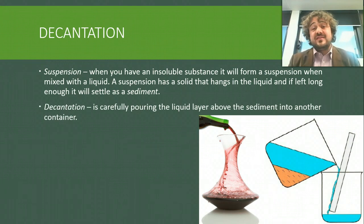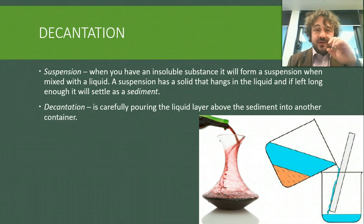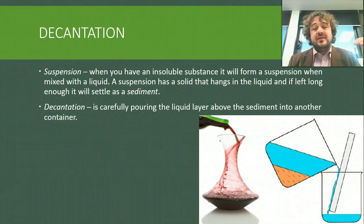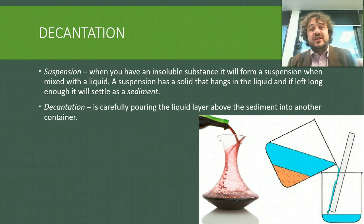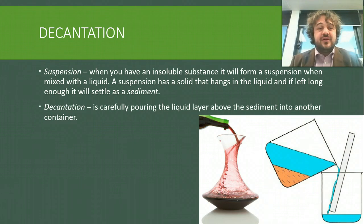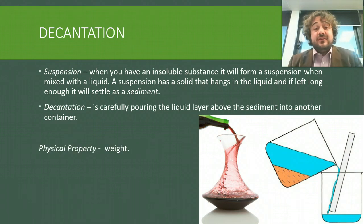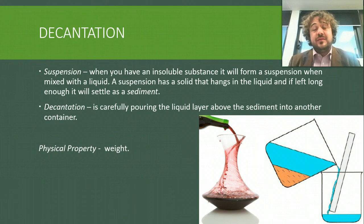Decantation is essentially just slowly pouring — you pour the liquid layer off and leave the sediment in the previous container. You pour very gently and the liquid layer just comes off. The property that you're using there is weight — the weight of it pulls it down to the bottom.